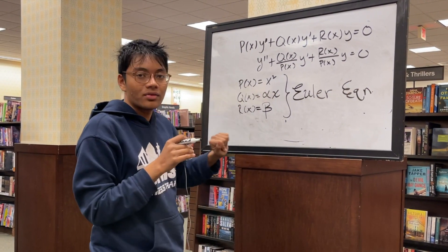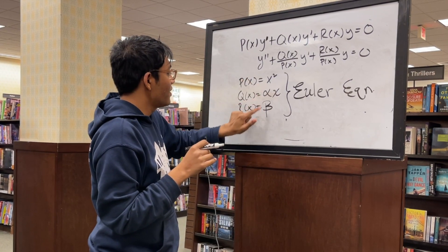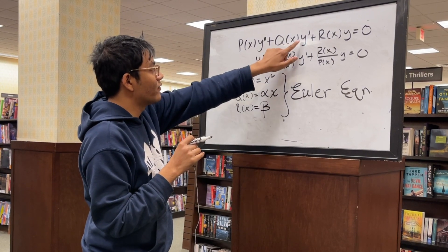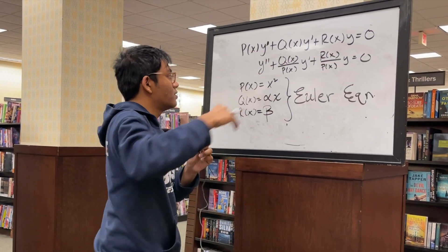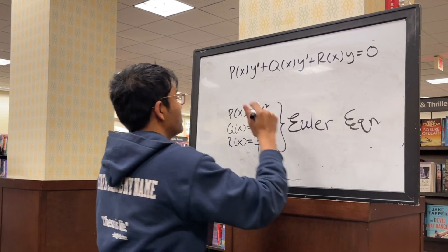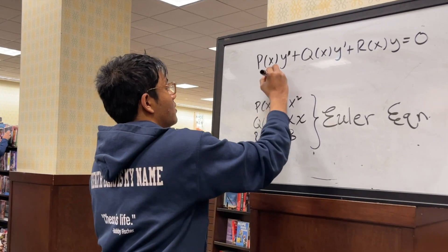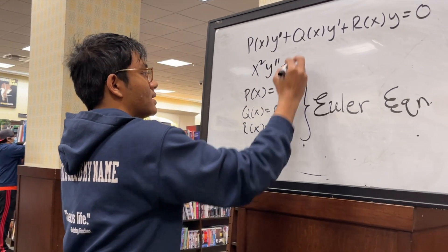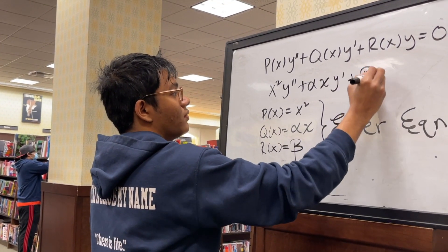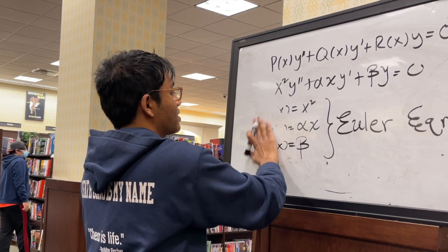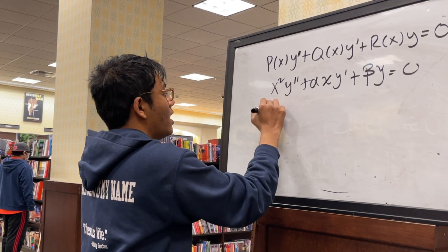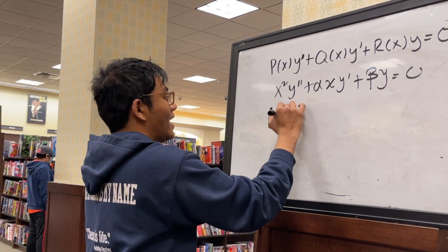So how do you solve a second order ODE with these three coefficients: x squared in front of y double prime, alpha x in front of y prime, and beta in terms of y? We write x squared y'' plus alpha x y' plus beta y equals 0. The simplest approach is to guess that y is of the form x to the r.